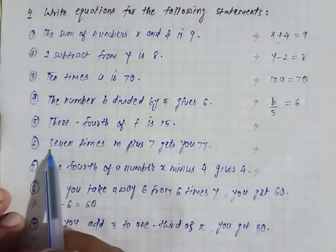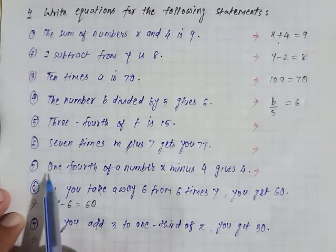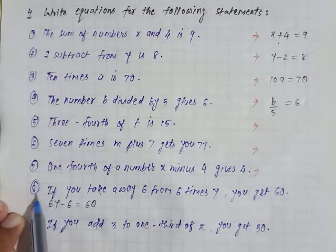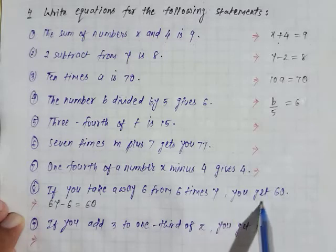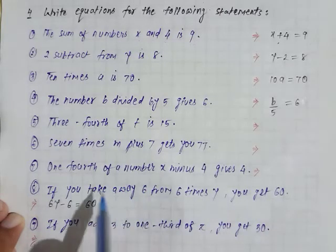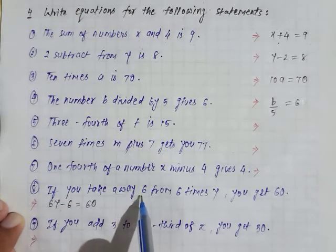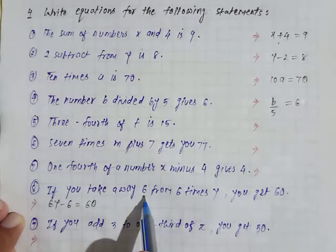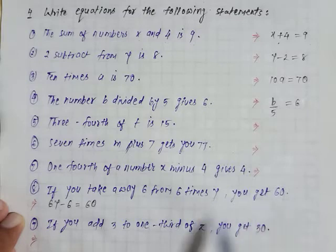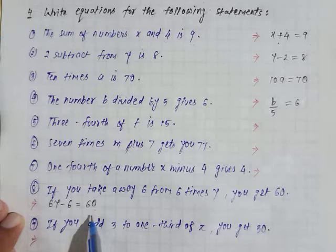Similarly, question numbers 5, 6, 7, this is for you for your practice. Now come to question number 8. If you take away 6 from 6 times y, you get 60. Take away means we have to minus. So y times 6 and from that subtract 6, we will get 60. It becomes 6y minus 6 is equal to 60. This is our equation. Question number 9 is your homework.